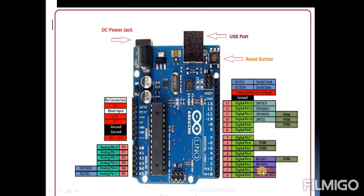The serial communication is carried through two pins — the transmit pin and the receive pin. Pins 2 and 3 are useful for providing external interrupts.